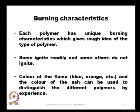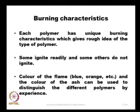The simplest method is burning characteristics. Each polymer has a unique burning characteristic that gives a rough idea of the type. Some polymers readily ignite while others do not. When ignited, the colour of the flame — blue, orange, and others — and the ash produced are indicative of the polymer type. By looking at the flame colour or ash, we can identify different polymers, though it requires some experience as it is subjective.